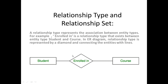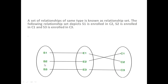This is a relationship and this is an entity type. A set of relationships of the same type is known as a relationship set. The following relationship set depicts: s1 is enrolled in c2, s2 is enrolled in c1, and s3 is enrolled in c3.